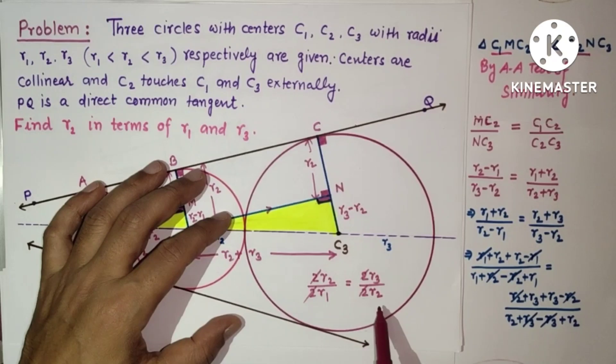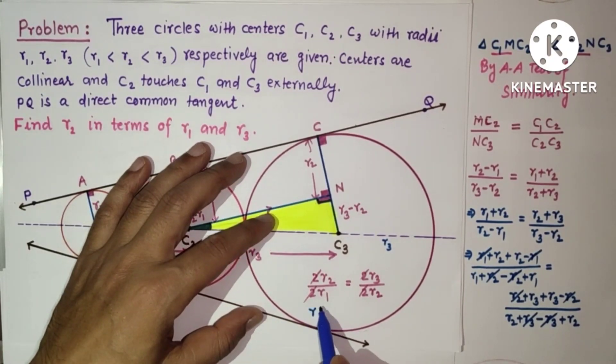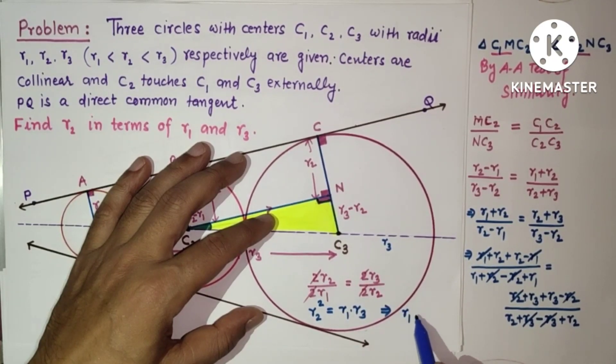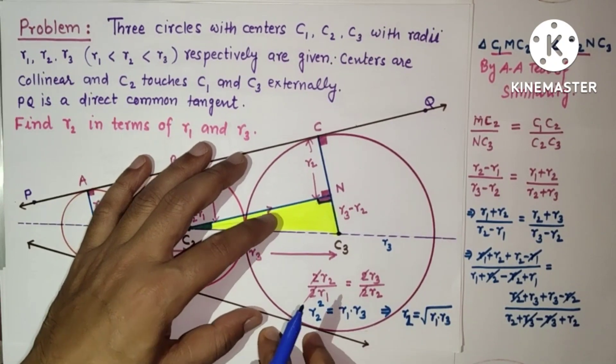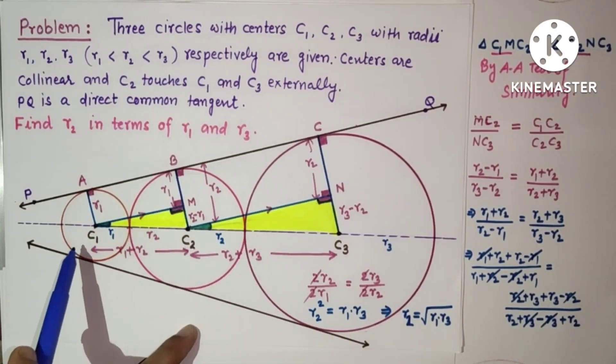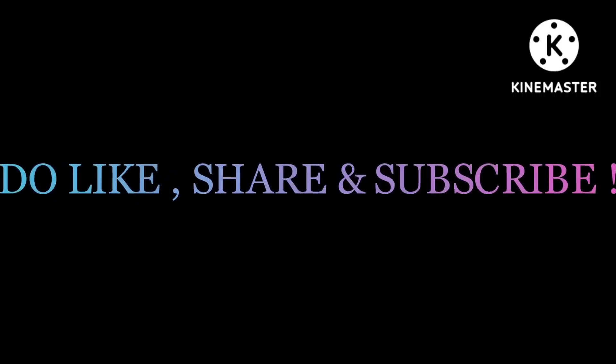R2 into R2 is R2 square, and R1 into R3. So we finally found R2 squared is equal to R1 into R3, and that is R2 is equal to square root of R1 into R3. So R2, the radius of the middle circle, will be the geometric mean of the first circle radius R1 and the third circle radius R3. Thank you.